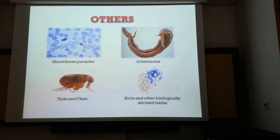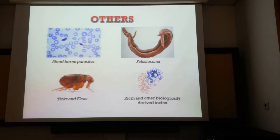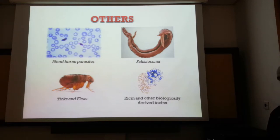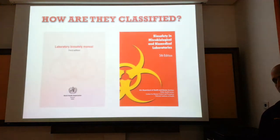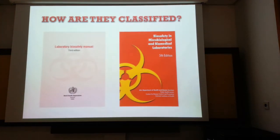We also have other parasites, including vector-borne parasites spread by the Aedes aegypti mosquito, as well as Schistosoma spread by aquatic snails. Ticks and fleas can serve as vectors for the transmission of bacterial pathogens, and ricin and other biologically derived toxins have the potential to cause harm even though they are non-living. So we have a wide range of biological agents.